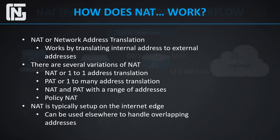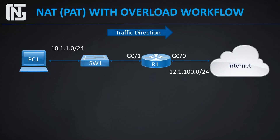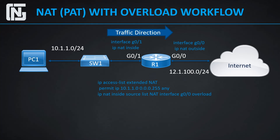Let's take a look at a couple of examples of exactly how this works. In this basic network setup, we have PC1 connecting to Switch1, which connects to R1, which connects to the internet. We have a 10.1.1.0/24 network on the inside and a public connection to 12.1.100.0/24 on the outside. The first thing that has to happen is specifying what interfaces are doing what — Gig 0/1 is the inside interface and Gig 0/0 is the outside interface. With NAT and PAT overload, whatever IP is applied to Gig 0/0 is the IP all traffic from R1 will appear to come from.